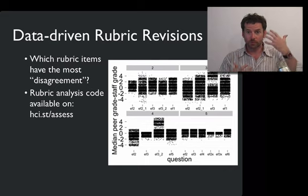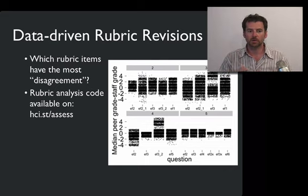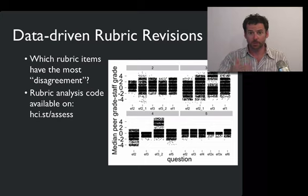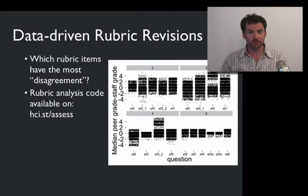We also saw both in the numerical data and in the course forums that some of the rubric items were less clear than others. They generated higher ambiguity and a less strong signal. So we plotted the variation among reviewers and used that to help guide our efforts at improving the rubric subsequently. Indeed, the quality of the rubrics after improvement went up in terms of rater agreement. All of the code I'm going to talk about today, including this data-driven rubric code, is available on our website.